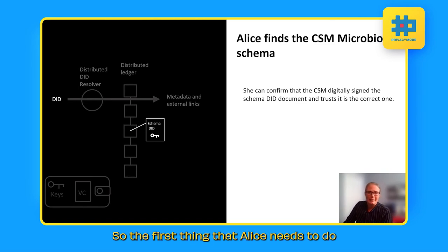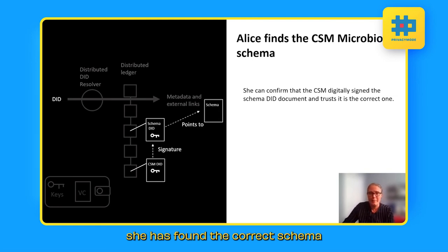So the first thing that Alice needs to do is that she goes out and she finds the CSM microbiome schema. Perhaps on the CSM web page, they have published a list of schemas that they support or endorse or that they are authors of. And that's maybe the way that she enters into this ecosystem. She's found the identifier for the schema. She looks it up and she can confirm that the CSM were the ones that digitally signed the schema DID. And she trusts that she has found the correct schema because she looks up the CSM. They're a decentralized identifier. She looks at who signed the schema and she confirms that it was them. And then she is able to go follow the links and find the actual schema.